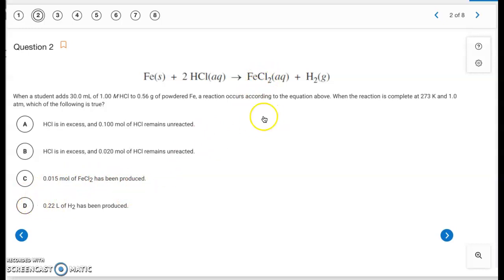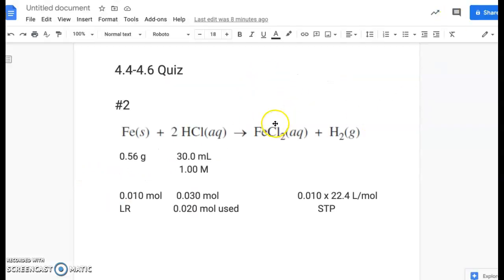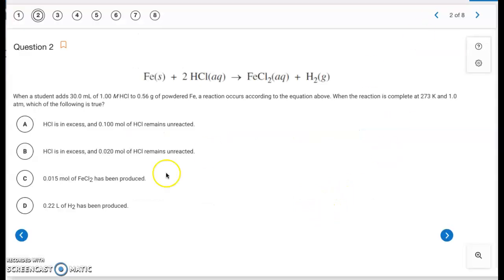So the answer has to be D, but let's confirm that. This is how much H2 gets produced. And since it talks about STP conditions, 273 Kelvin and 1 atmosphere, we can convert it to liters using this molar volume, 22.4. So we just multiply those together, and you end up with 0.22, which is your answer for letter D. So that's the correct one.